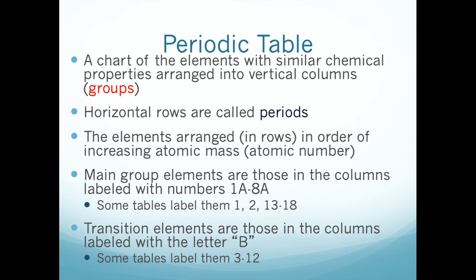One change from Mendeleev is that instead of organizing elements by mass, we use the atomic number. If you look at your periodic table, all elements are organized left to right and top to bottom in order of atomic number. Hydrogen in the top left is element 1, helium is element 2, lithium is element 3 with symbol Li, and so on in sequential order.